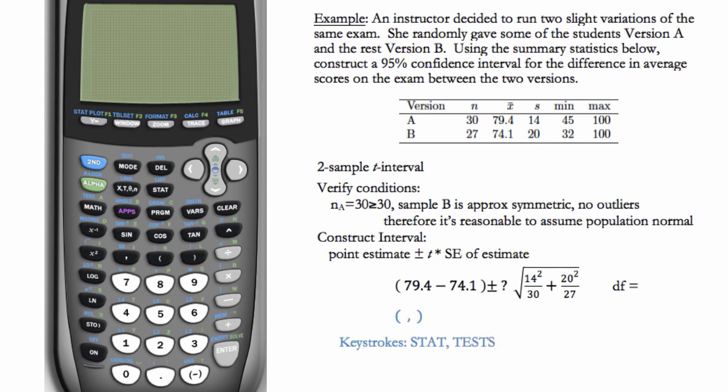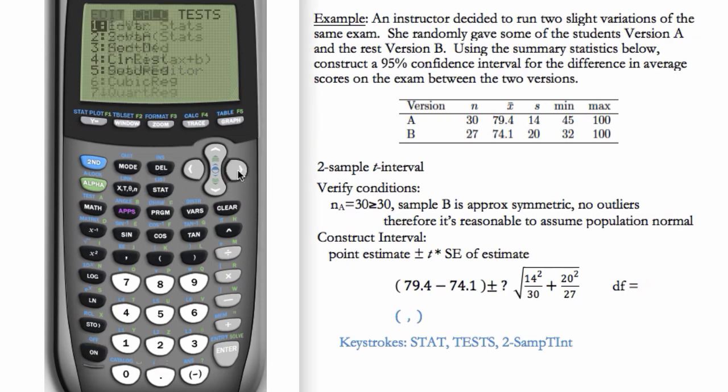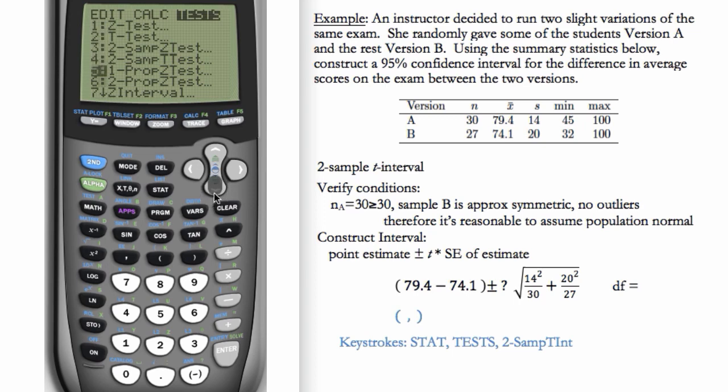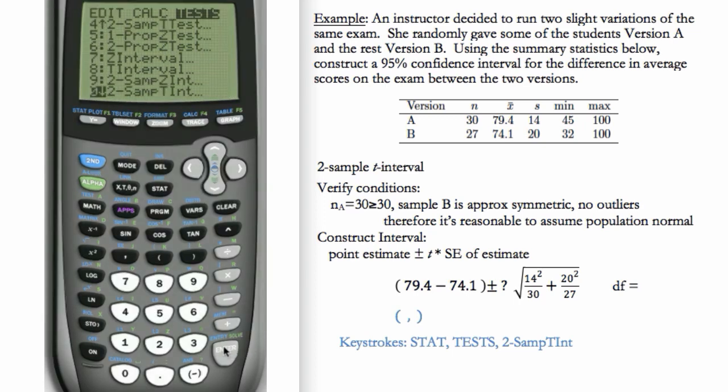So we'll go to stat, test, and we'll do 2samp t int. So we'll go to stat, over to tests, and scroll down to 2samp t, and hit enter.